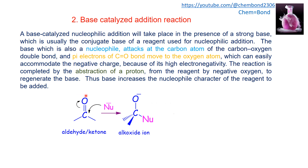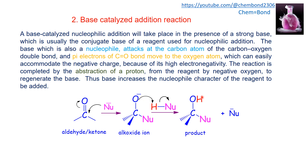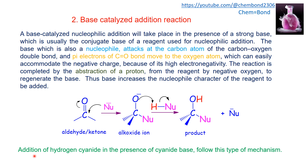The negative charge resides on oxygen, and the reaction is completed by the absorption of a proton — the bond breaks, the proton is absorbed by the negatively charged oxygen, and a final product is formed. The nucleophile, which acted as a base, is released at the end of the reaction — confirming it is a base-catalyzed reaction. Addition of hydrogen cyanide in the presence of cyanide base follows this type of mechanism.